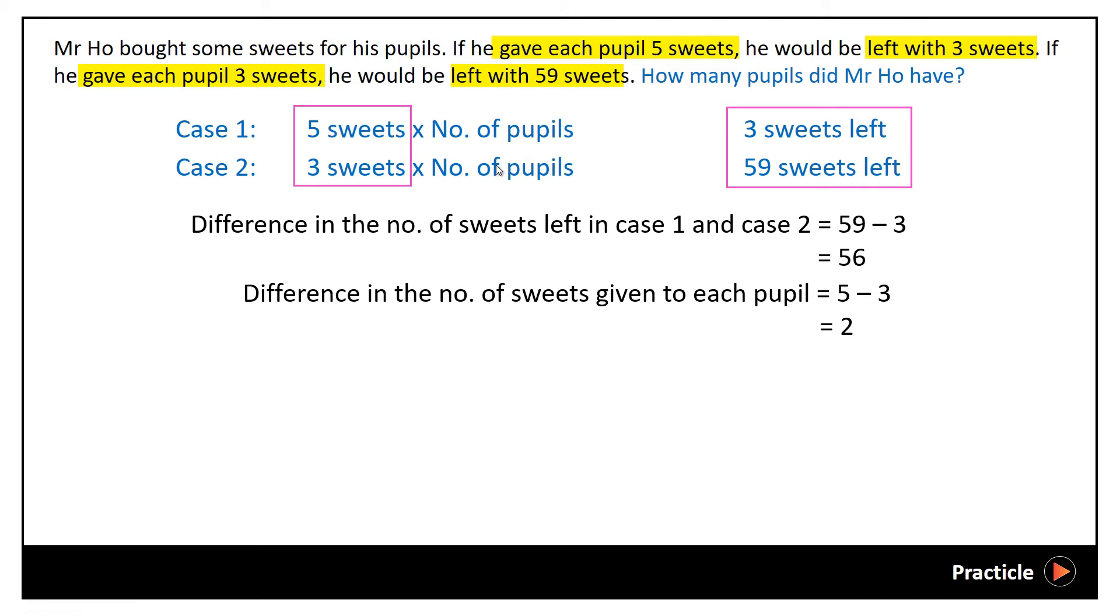So in order to find the number of pupils that Mr. Ho had, all we need to do is to take this extra number of sweets, 56, divided by the difference in the number of sweets given to each pupil, which is 2. And this would give us an answer of 28.